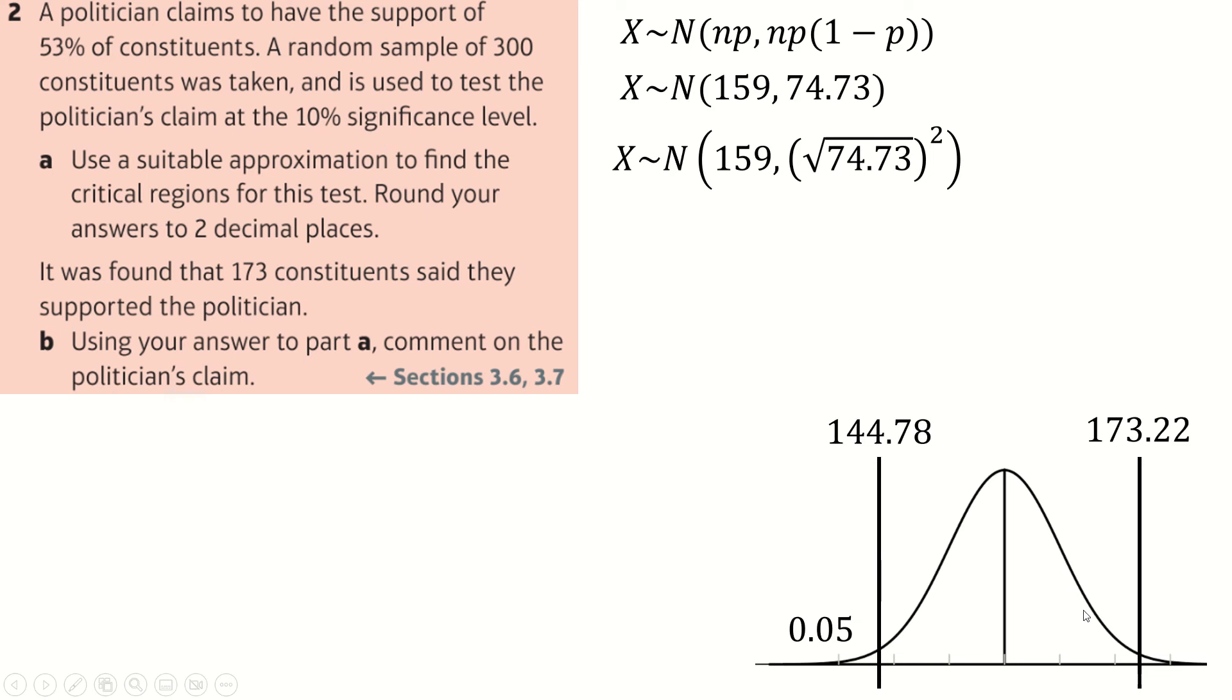And then again, we can use symmetry to work out this value. And so below 144 or equal to, and above 174 or equal to are going to be our critical regions. 173 is just inside the critical region. So therefore, we accept H0.